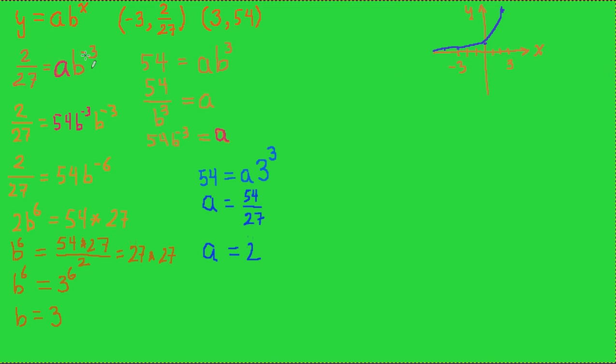So we found out what b was by first solving one of the equations for a, substituting that value into the other equation and discovering what b was. Once we knew what b was we could substitute it back into the other equation and find out what a is. So now we know that the exponential equation that we're looking for is y is equal to 2, the a value that we found, times 3, the b value that we found, raised to the x power.